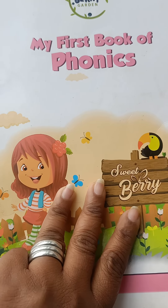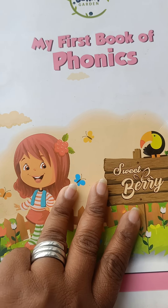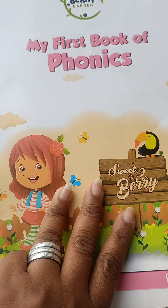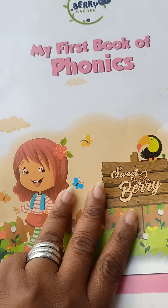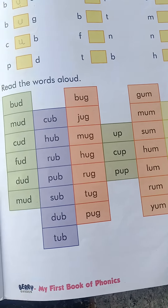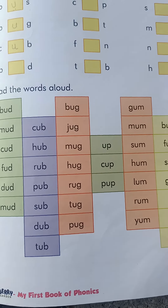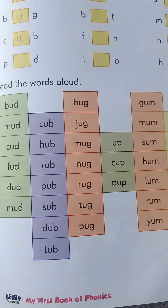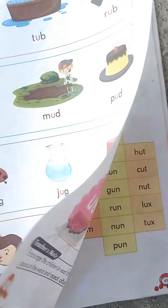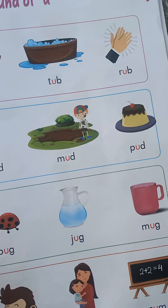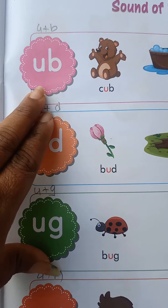Good morning children, today is our English period. So take your phonic books. Today we are going to learn the sound of U. Take your phonic books and come to page number 41. First we write CW and today's date.